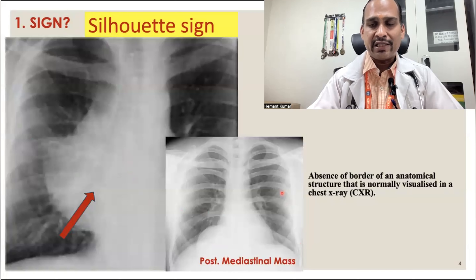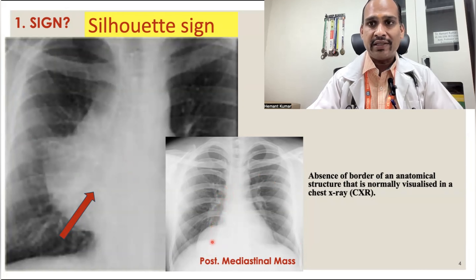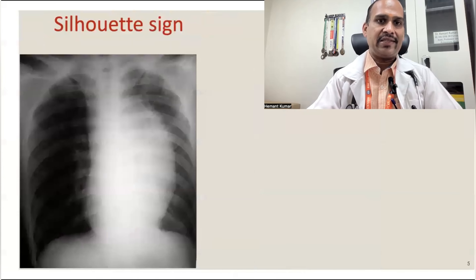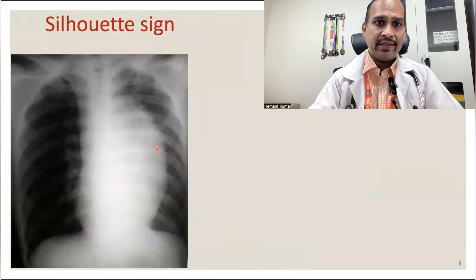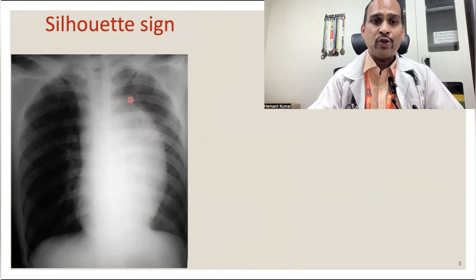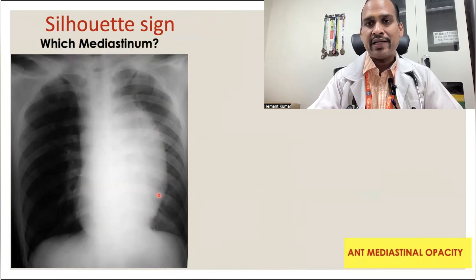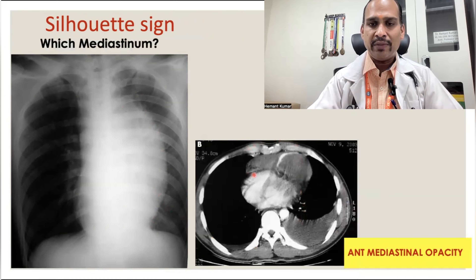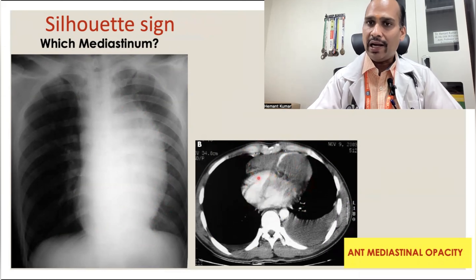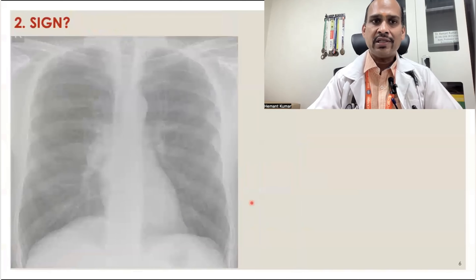That second example is a posterior mediastinum mass. Any opacity which obscures the right heart border is anterior mediastinum. You can also see another opacity where you cannot make out the left heart border — any opacity obscuring the left heart border is anterior mediastinum. On CT scan, you can appreciate this opacity in the anterior mediastinum, in front of the heart. That's about the Silhouette sign.